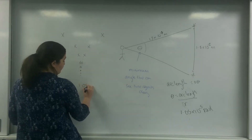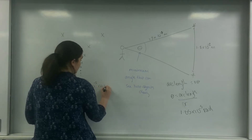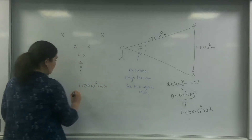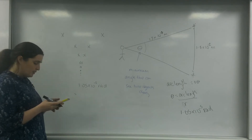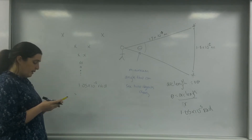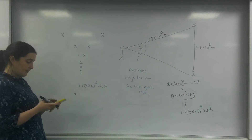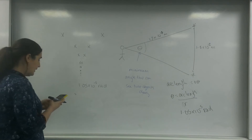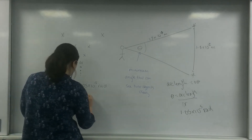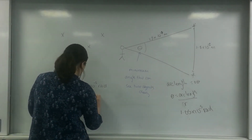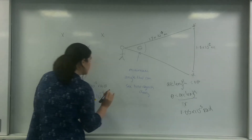That is 6.5 times 10 to the minus 5 radians. To convert to degrees, I times by 180 and divide by pi, giving 6.1 times 10 to the minus 4 degrees.